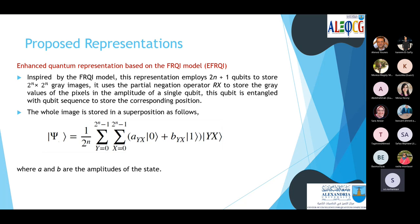The first proposed representation is called EFRQI, inspired by the FRQI model. It uses two-n-plus-one qubits to store 2^n by 2^n gray images. In this representation, we use the partial negation operator to store the gray value of each pixel in the amplitude of a single qubit, entangled with a qubit sequence of 2n qubits to store the pixel position. The image is stored in superposition, where a and b are the amplitudes of the state holding the pixel values, and yx are the pixel coordinates.